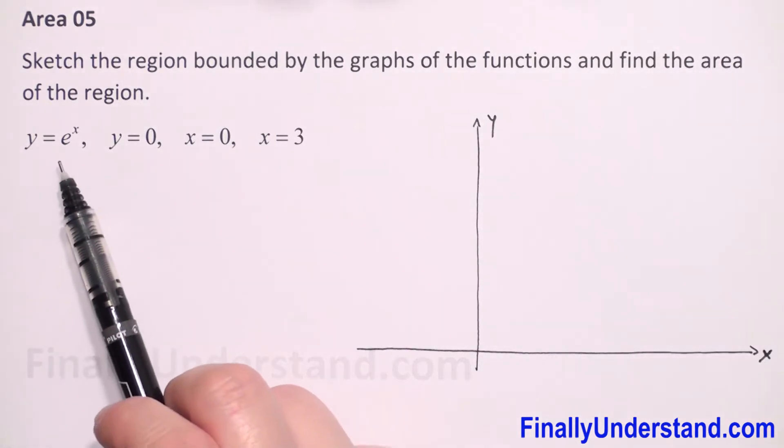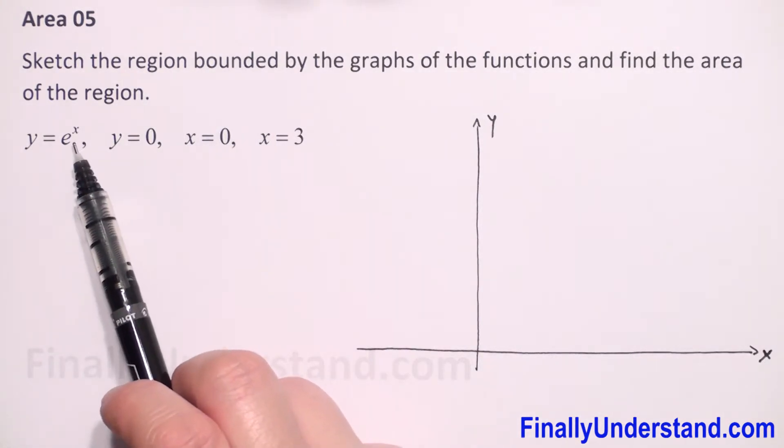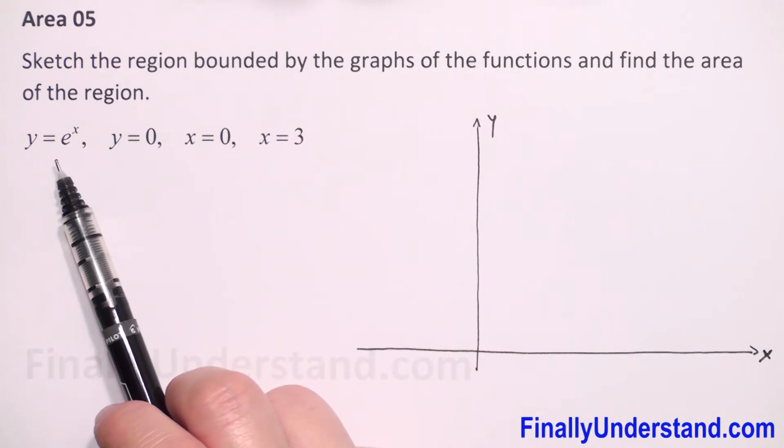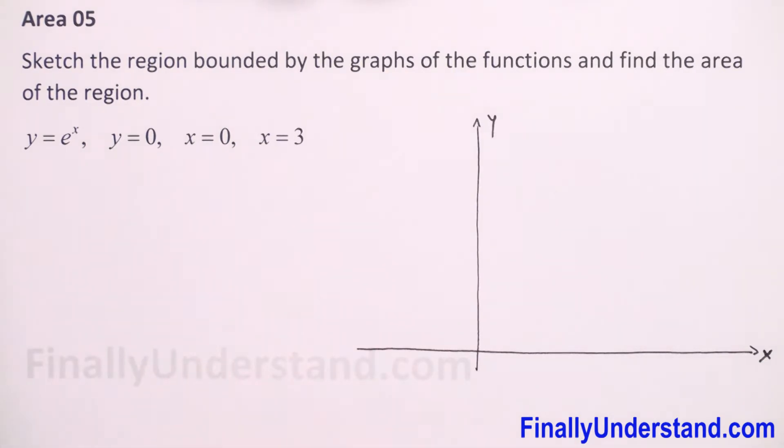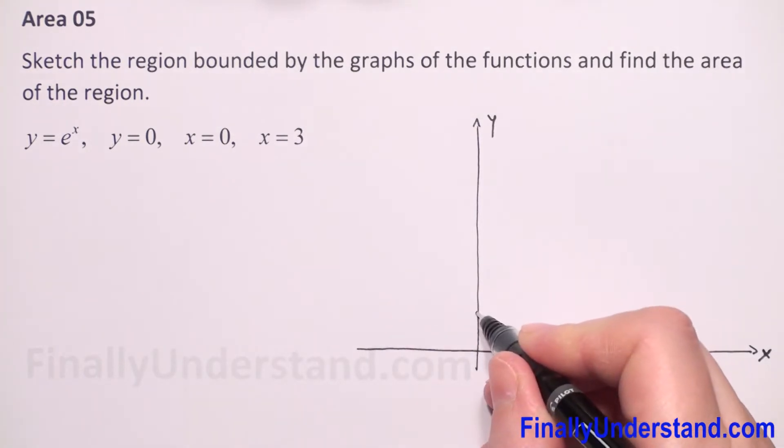First function we have is exponential function e to power x. We know that the graph of exponential function is in the first and in the second quadrant. For x equals zero we have value e to zero power is one.